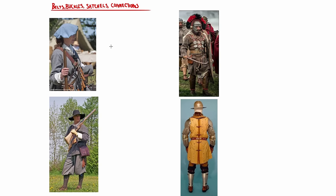Something that students generally overlook are points of connection — the buckles and facets that connect articles of clothing together. There are a lot of intricacies to these points of connection, but our main goal should be to make them appear functional. A belt doesn't simply rest on the body; it has a buckle through which the belt is looped to create more tension, and that tension exerts a force on the underlying fabric.